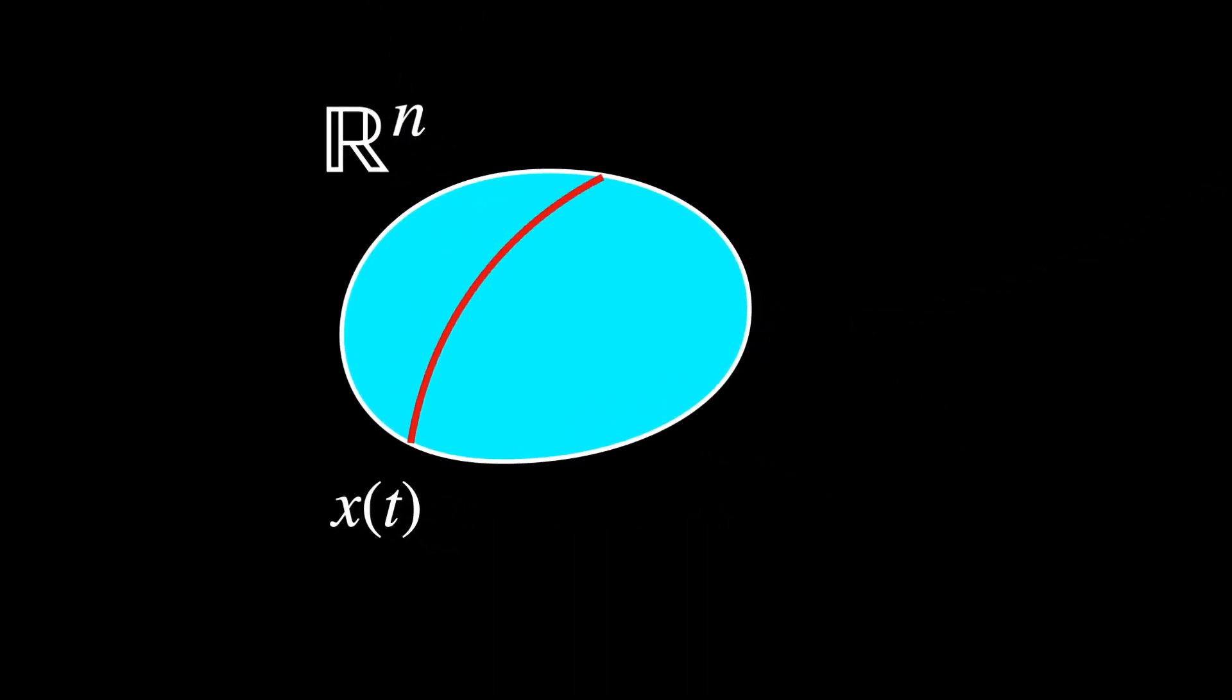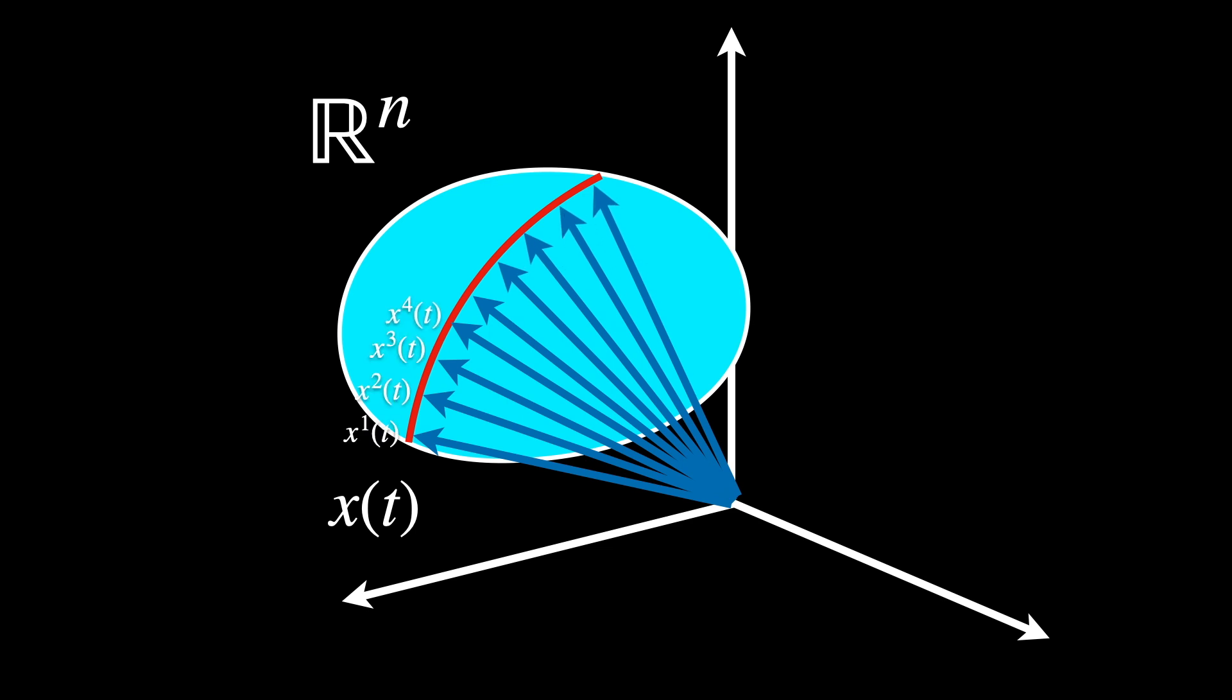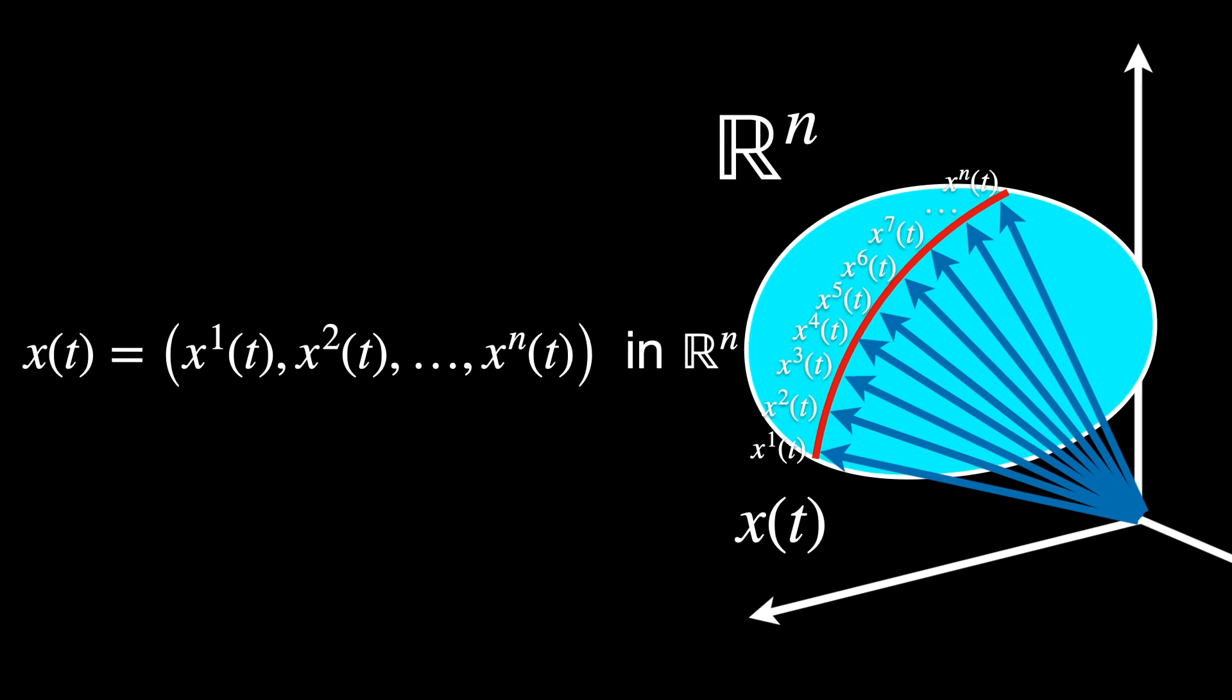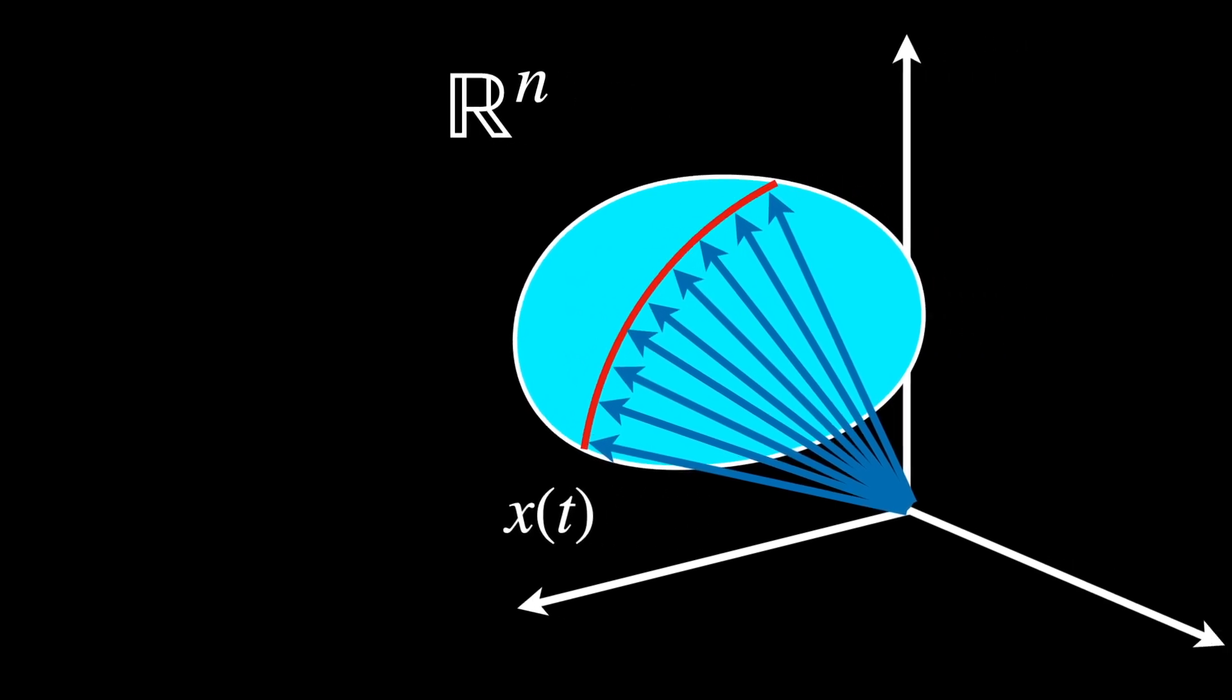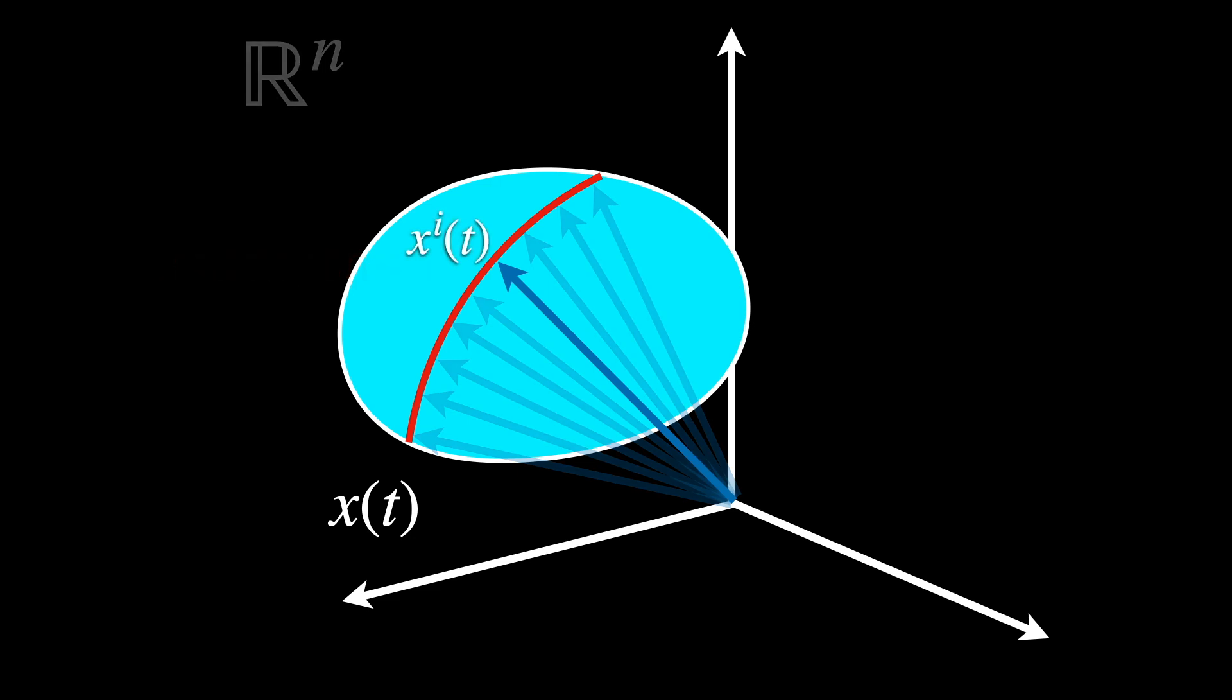So, X of T is a vector of coordinates that tells us where the point is in Rn, the local Euclidean space. The curve Gamma of T on the manifold M is now represented in terms of local coordinates X of T with components X1 of T, X2 of T, and so on until Xn of T in Rn. This is saying that X of T is a vector of N components, where each component XI of T represents one of the coordinates in the local Euclidean space Rn at time T.